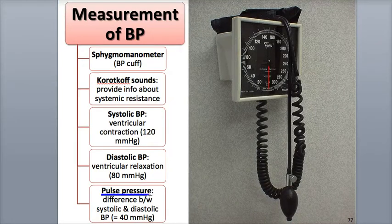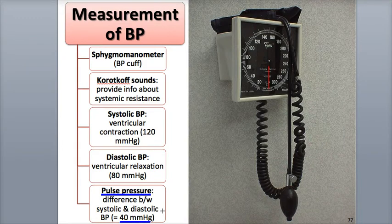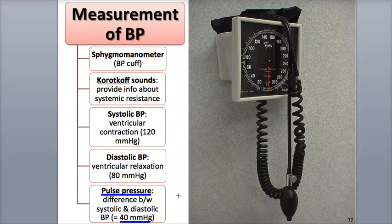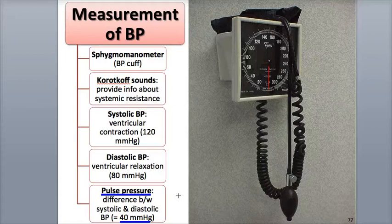Pulse pressure is the difference between the systolic and diastolic pressures, normally around 40 millimeters of mercury. It's a useful number that gives some insight into the overall state of one's cardiovascular system. Systolic pressure is normally 3 times the pulse pressure, while diastolic pressure is normally 2 times the pulse pressure. This relationship can be expressed as a ratio of 3 to 2 to 1.